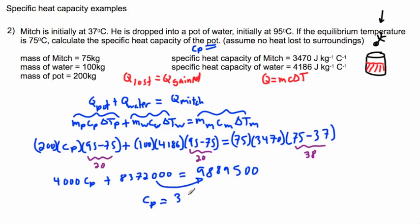Of course that is in units of 380 joules per kilogram per degree Celsius. This is my answer. The specific heat capacity of the pot is 380 joules per kilogram per degree Celsius.